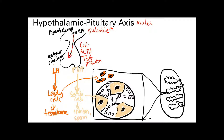LH is luteinizing hormone. In males, luteinizing hormone acts on the Leydig cells. As seen in this picture, Leydig cells are not in the seminiferous tubules — they're in the interstitium of the testes, next to the seminiferous tubules.